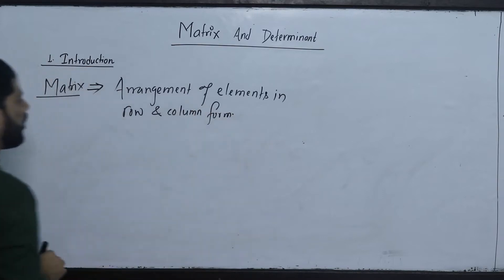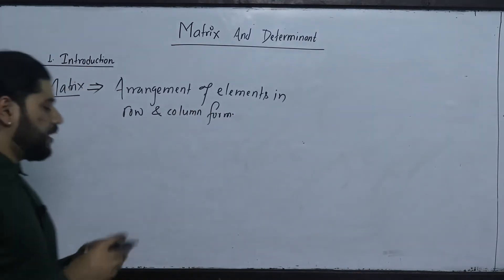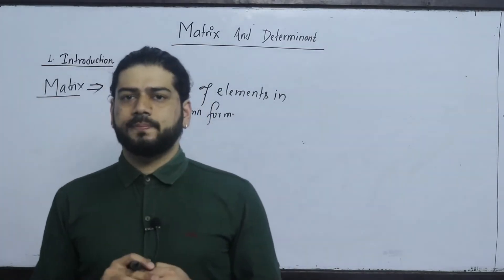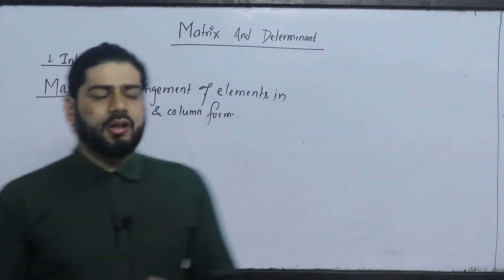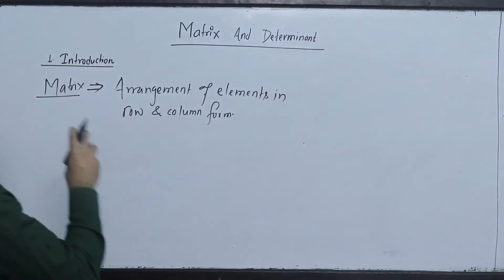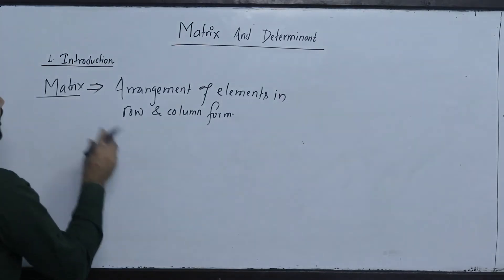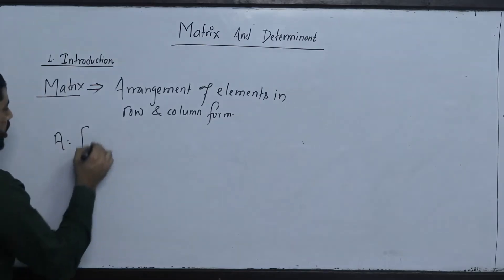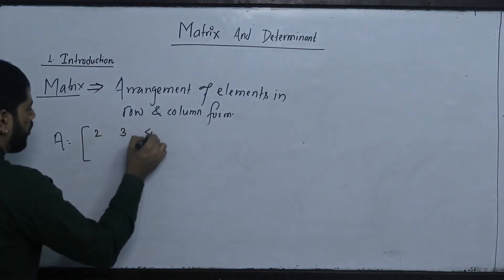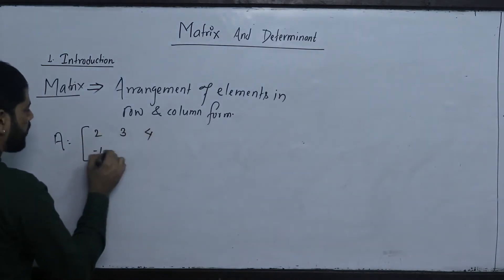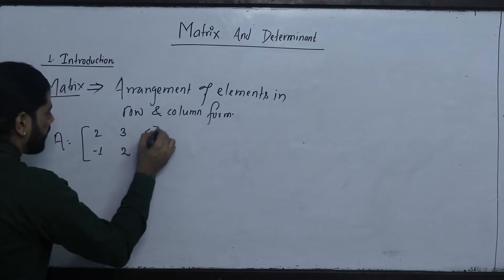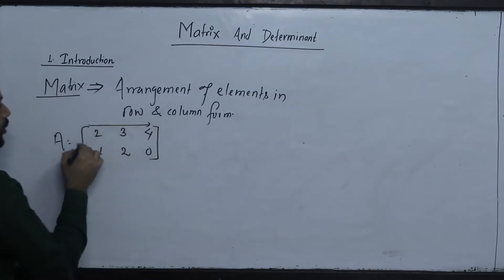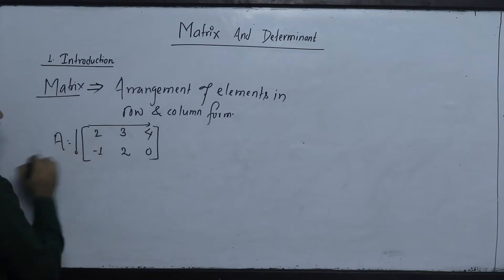What is the matrix? The matrix is an arrangement of elements in row and column form.